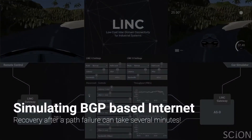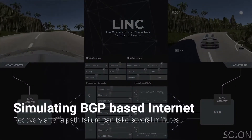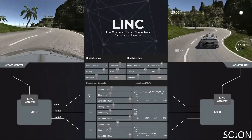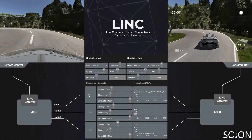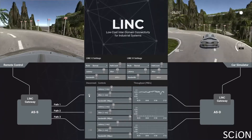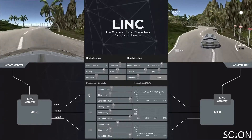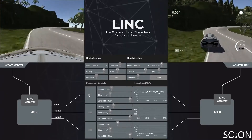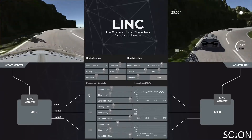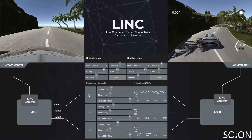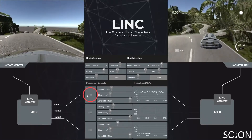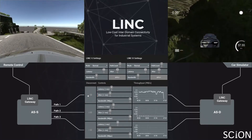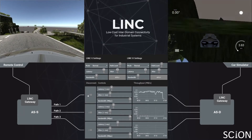In the first scenario, we are simulating a BGP-based internet. The end hosts have no control over the paths chosen. If the path fails in the network, it can take several minutes to find a new path. Now the current path has failed, resulting in the remote control losing connection and leading to the car's crash.